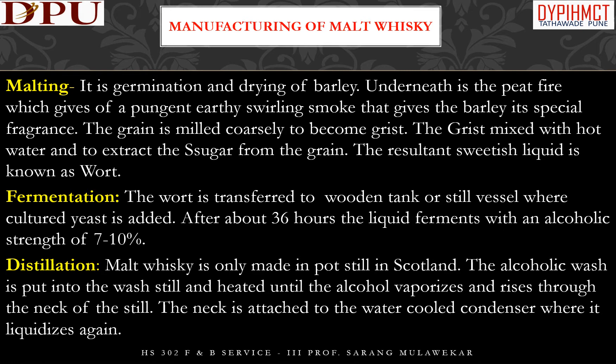The first step is malting — the germination and drying of barley in the presence of a peat fire, which gives off a pungent, earthy, swirling smoke. The smoke gives the barley its special fragrance. The grain is then milled coarsely to become grist. The grist is mixed with hot water to extract sugar from the grain. The resultant sweet liquid is known as wort. Wort is then transferred to a fermentation tank where cultured yeast is added. After about 36 hours, the liquid ferments to an alcoholic strength of 7-10%. Once fermentation is complete, the liquid is called alcoholic wash and sent for distillation.